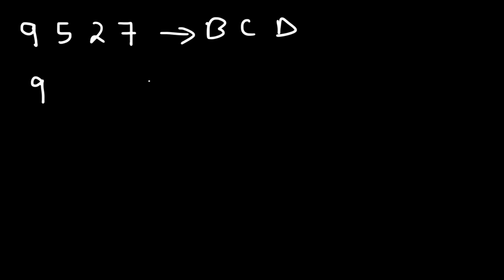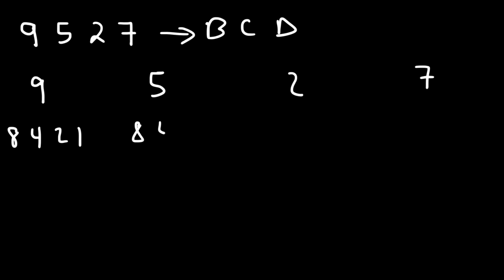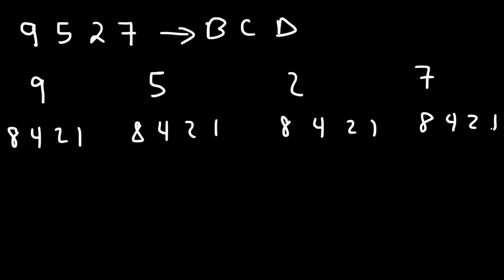So once again, separate the 4 digits. Let's write the numbers 8, 4, 2, 1. 8 is 2 to the third power, 4 is 2 squared, 2 is 2 to the first power, and 2 to the 0 power is 1.